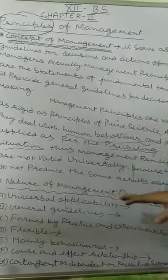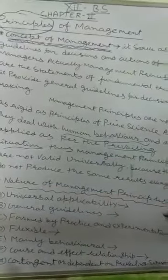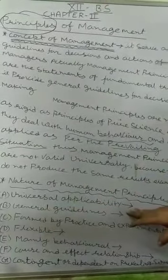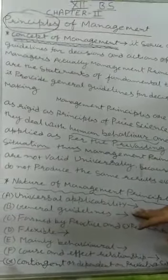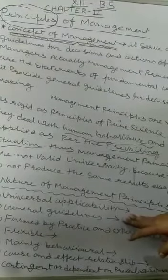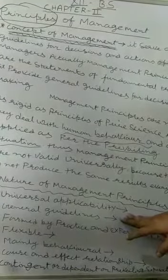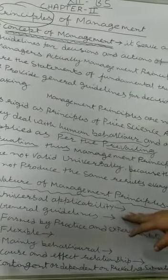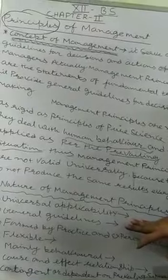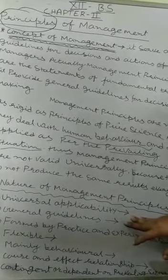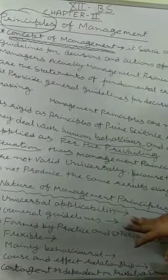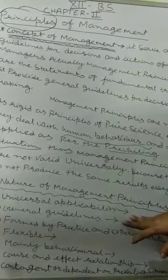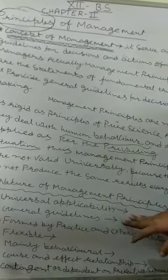Now we move to the next point of this chapter — the Nature of Management Principles. First is Universal Applicability. The principles of management — such as Taylor's scientific principles and Fayol's administrative principles — are adopted universally for every organization where work is performed in a managed way.